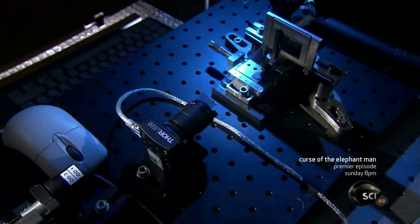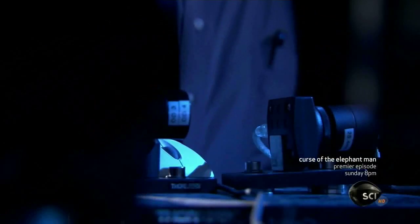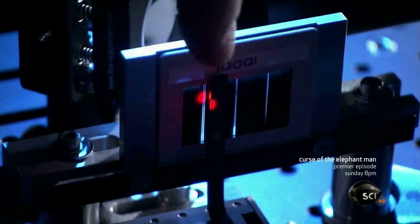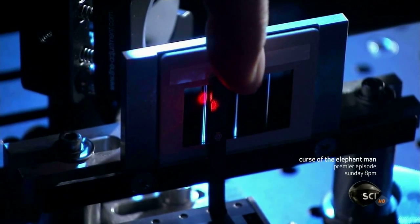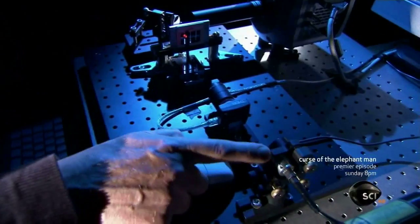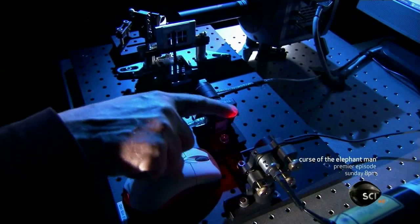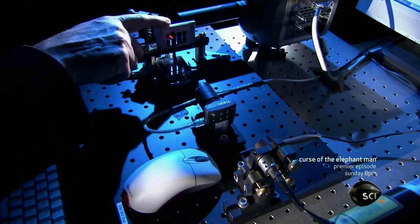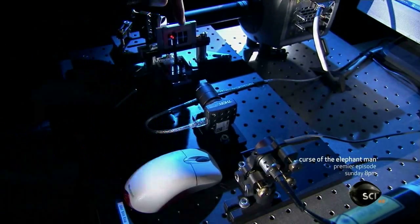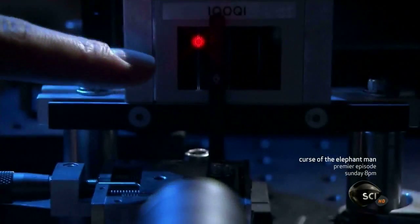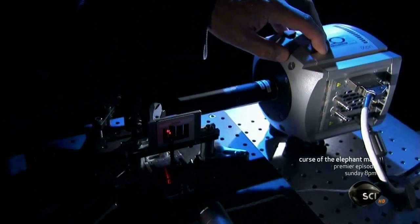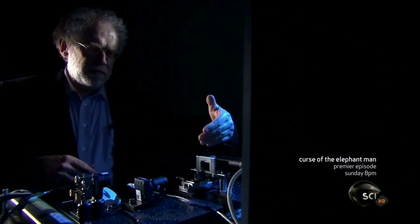This simple configuration shoots particles of light called photons one at a time through two tiny slits in a screen. With a laser which produces light, this light is attenuated such that only one photon at a time emerges. This photon paths through a two slit assembly and then we have a camera which registers the pattern behind the two slit assembly.